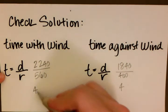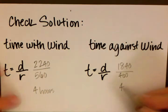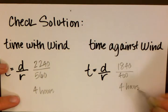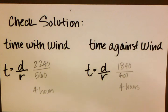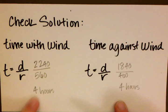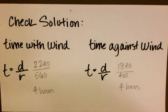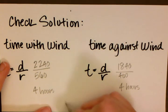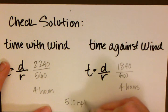These are in hours. The question tells us the plane flies with the wind in the same time as against the wind, and our double check gives us 4 hours for both. That verifies that our answer of 510 miles per hour is correct. The speed of the plane in still air is indeed 510 miles per hour.